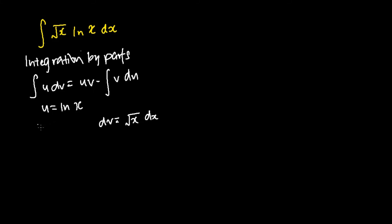So to find my du, I differentiate u with respect to x, so this gives me 1 over x, which when I multiply both sides by dx, I will get du equals 1 over x dx.